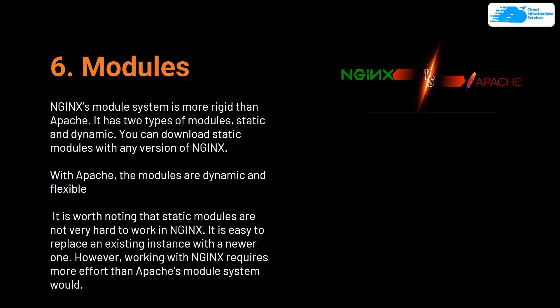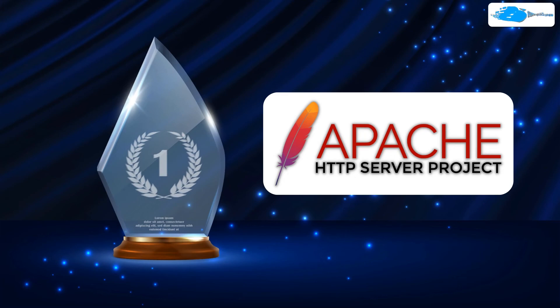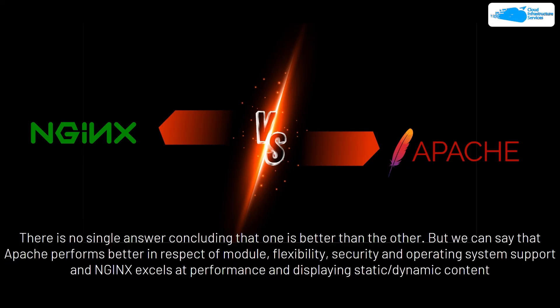The next category is modules. Nginx's module system is more rigid than Apache's — it has two types of modules: static and dynamic. Static modules can be downloaded with any version of Nginx. With Apache, modules are dynamic and flexible, with no extra concern needed. While static modules in Nginx aren't extremely hard to work with and it's easy to replace an instance with a newer one, working with Nginx requires more effort than Apache's modular system. The clear winner is Apache.